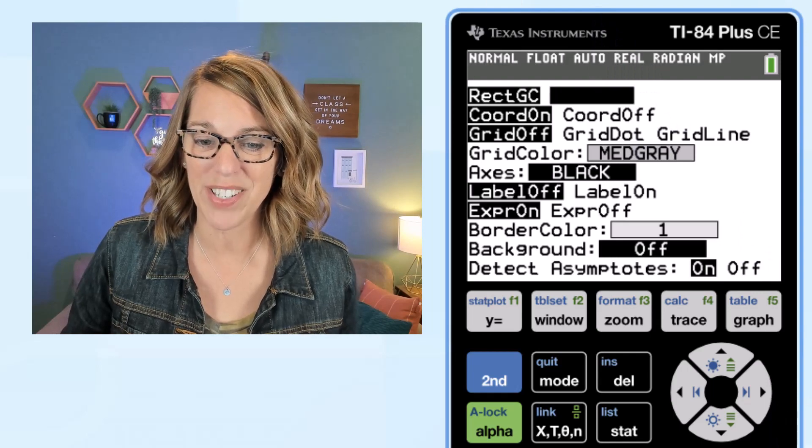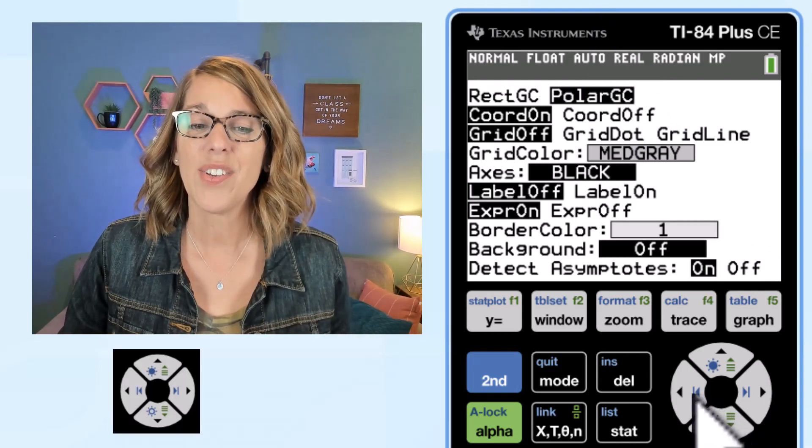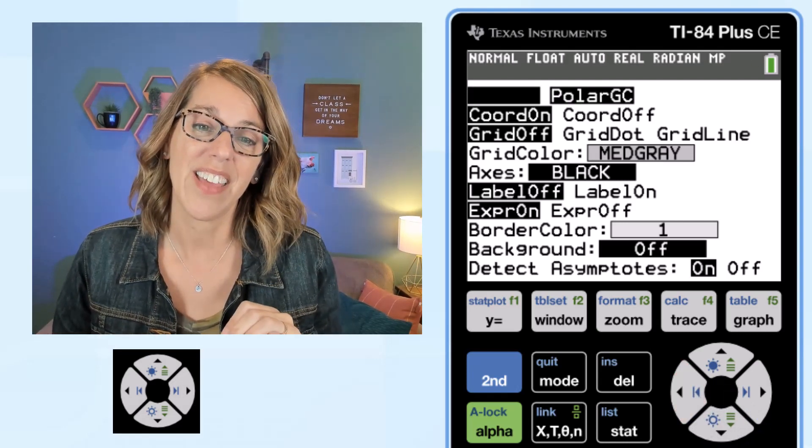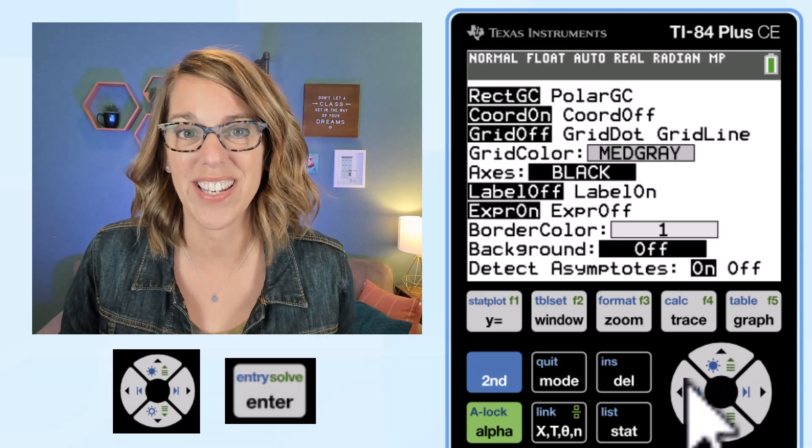If it doesn't for some reason and you need to make a change, say that polar is selected, you're gonna arrow over to what you do want to have selected and then hit enter. You can use your up and down left and right arrow keys to do that.